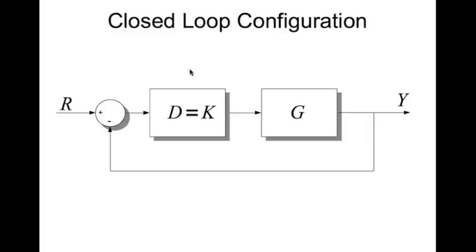This is the configuration of the controller. The controller here, D, is nothing but a proportional gain K, and G is the plant. Y is the output, R is the reference.